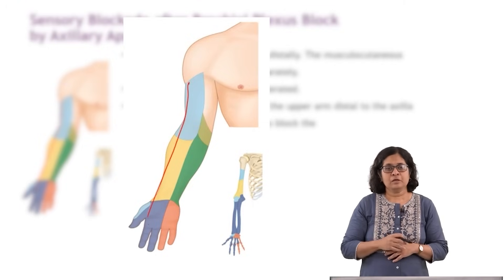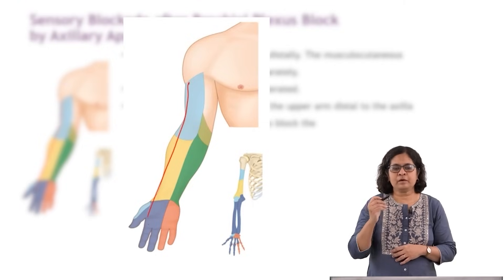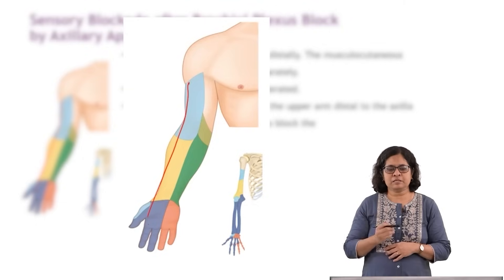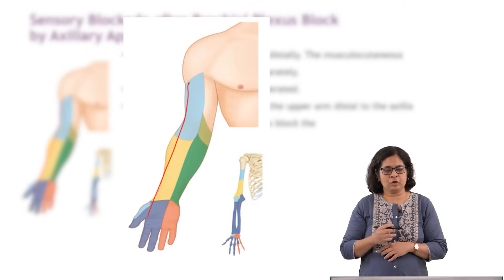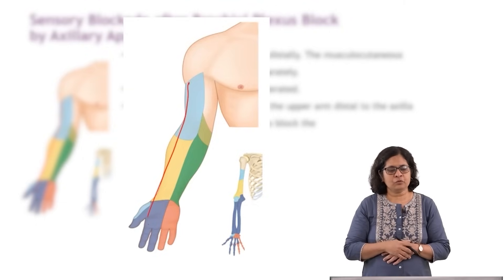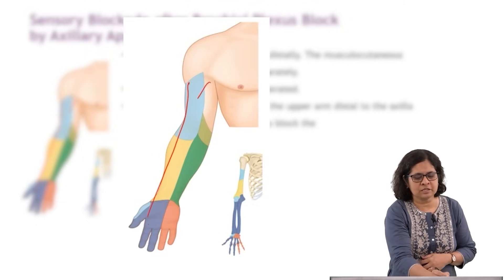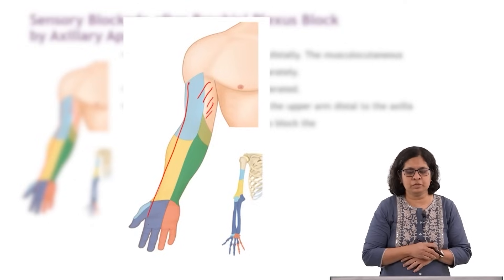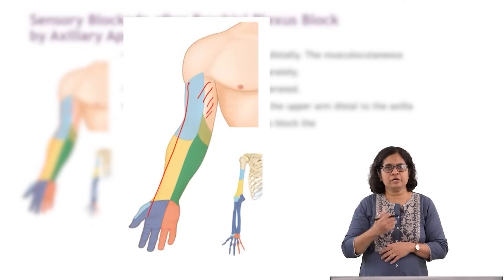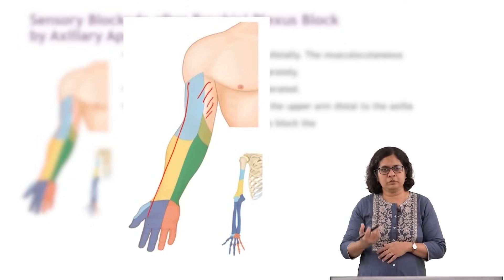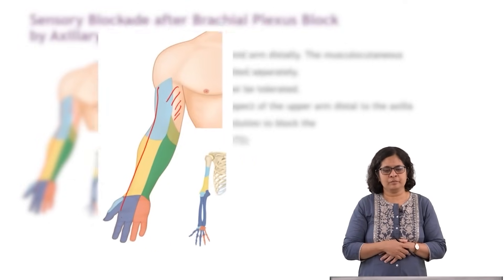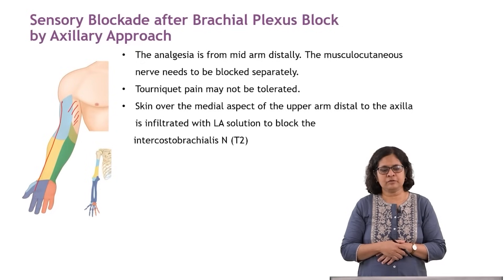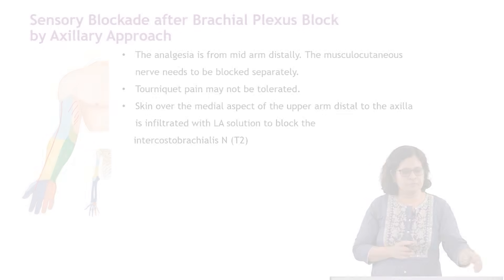Tourniquet pain may not be tolerated by this block, and the skin over the medial aspect of the arm is spared. Therefore that skin area needs to be infiltrated with local anesthetic solution to block the intercostobrachial nerve.